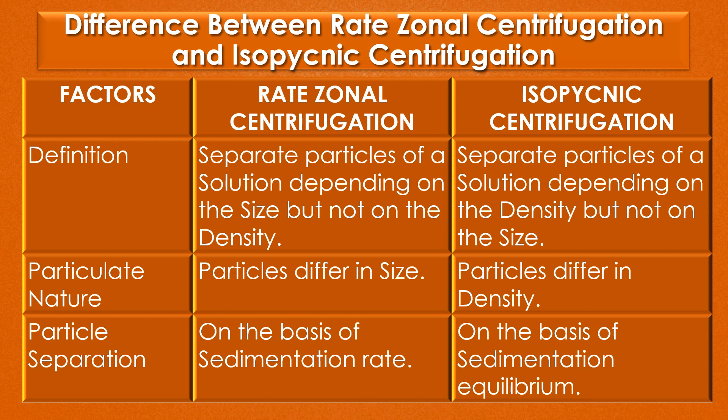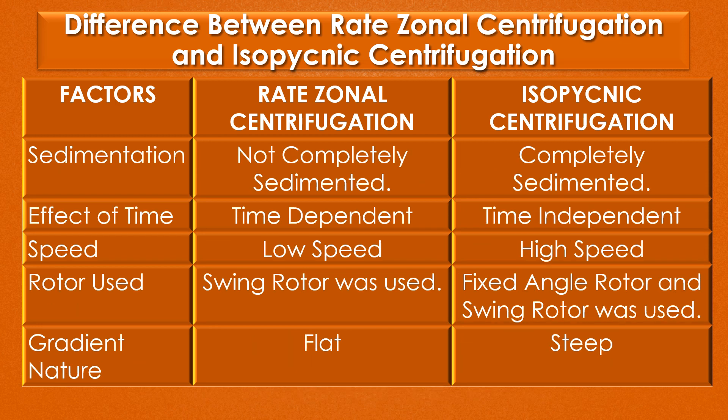Second, particulate nature. The particles in rate zonal centrifugation are of different size, but the particles in isopycnic centrifugation are of different density. Third, particle separation. Particles from rate zonal centrifugation are separated on the basis of sedimentation rate, while particles from isopycnic centrifugation are separated on the basis of sedimentation equilibrium.